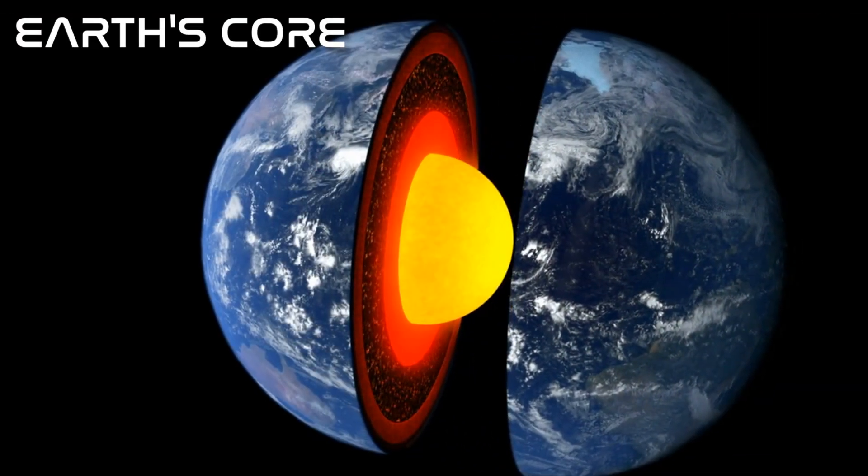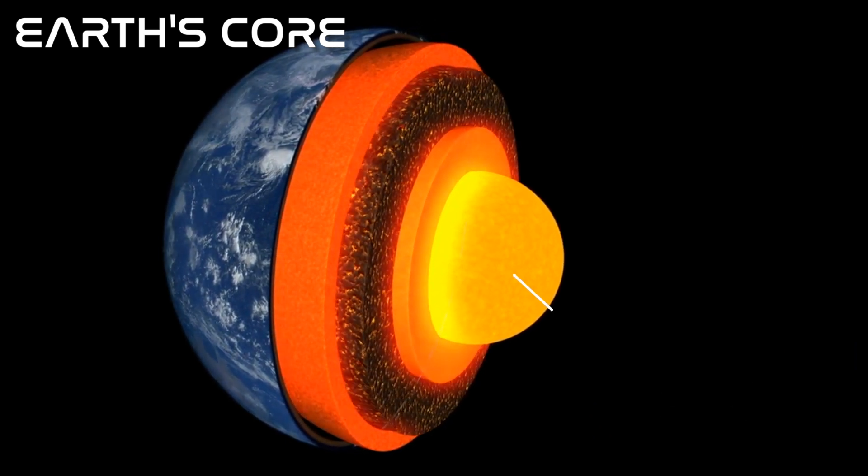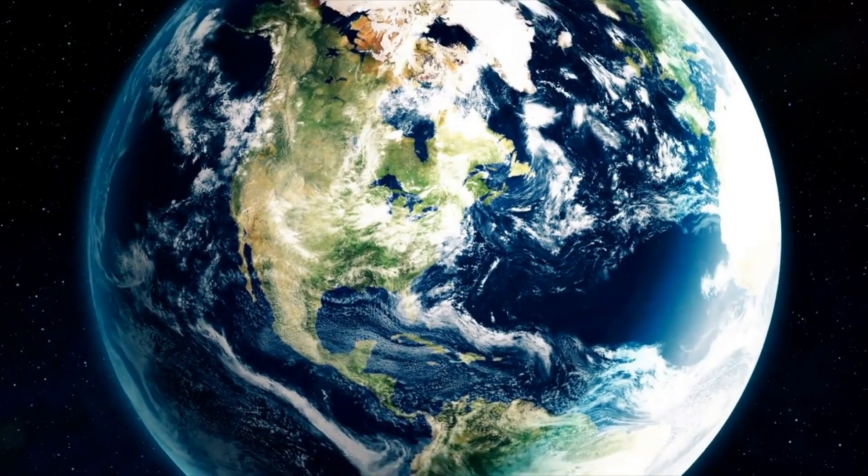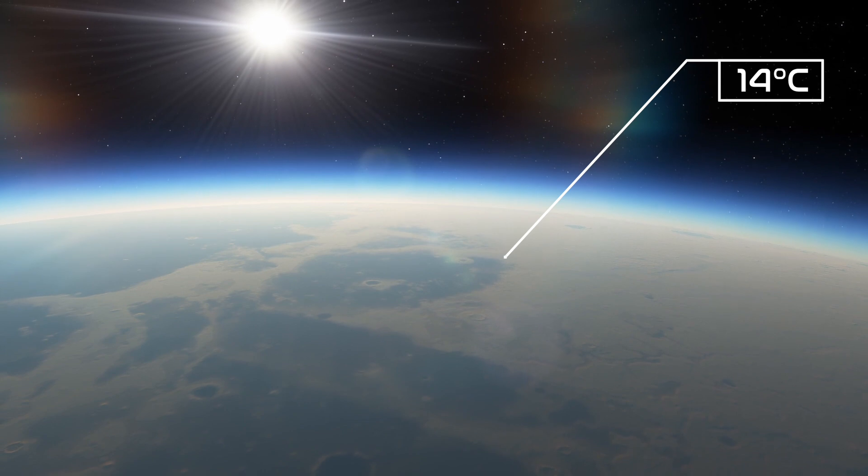Ruby has a boiling point of roughly 3,000 degrees Celsius. For comparison, the Earth's core has a temperature that is just a little bit higher, at 5,200 degrees Celsius, which steadily drops as we ascend to the mantle, crust, and finally the atmosphere, where the average global temperature is just around 14 degrees Celsius.